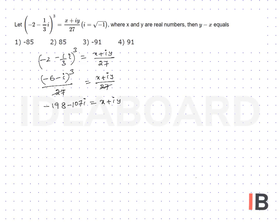We get x = -198 and y = -107. Now y - x equals -107 + 198, which equals 91. The correct answer is 4.